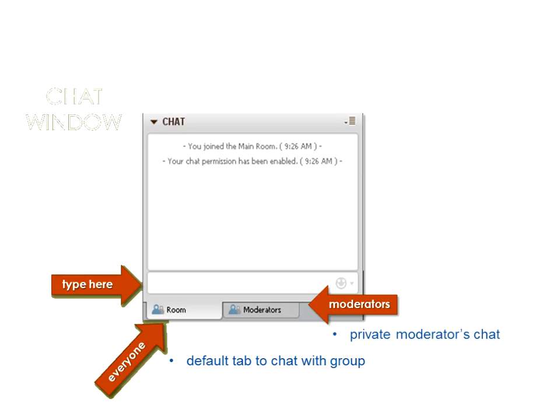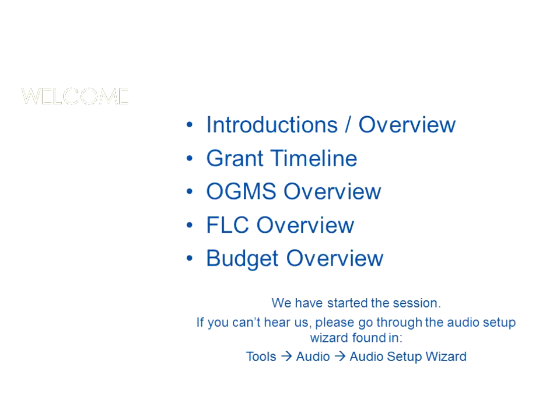In the participant tools you can use emoticons, show yourself as stepping away, raise your hand to speak and we'll call on you in order, and there's a polling feature. When you see the little blue microphone next to your name, your talk button is on — if you're not speaking, go ahead and turn that off so we don't hear background noise.